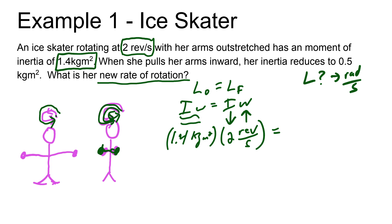When she brings her arms inward, that reduces her inertia because the radius is smaller and the mass is closer to her body. It decreases to 0.5 kilogram meters squared, and we solve for the new rotation rate. The units cancel and you're left with revolutions per second. That's why we can leave it as is. I get an answer of omega of 5.6 revolutions per second.